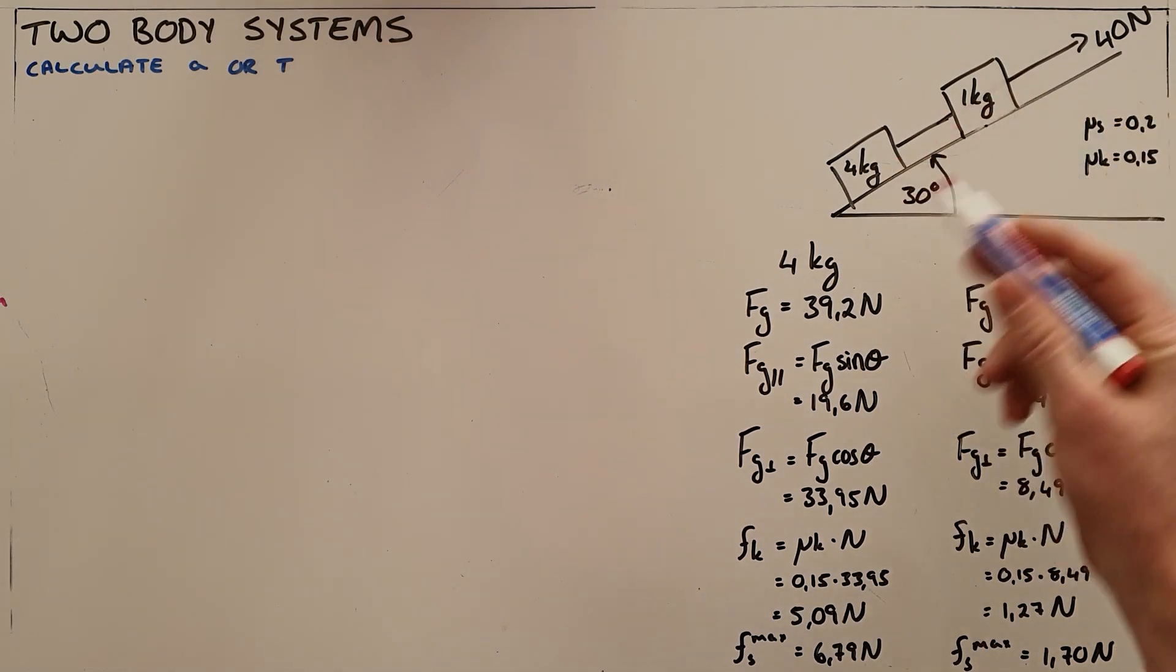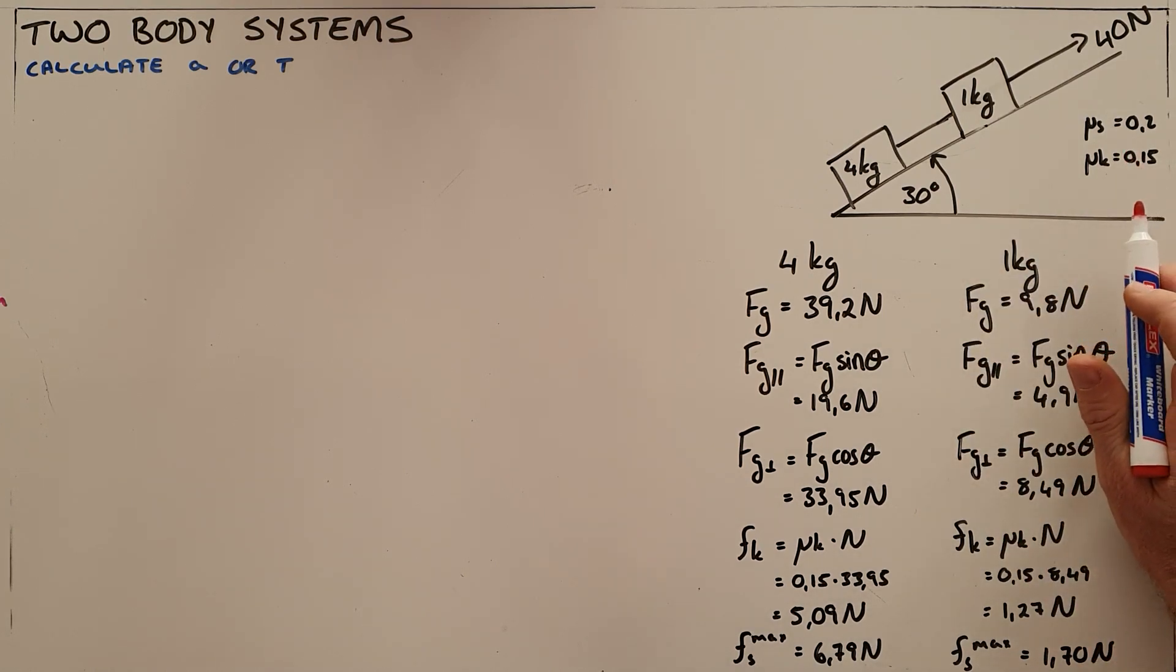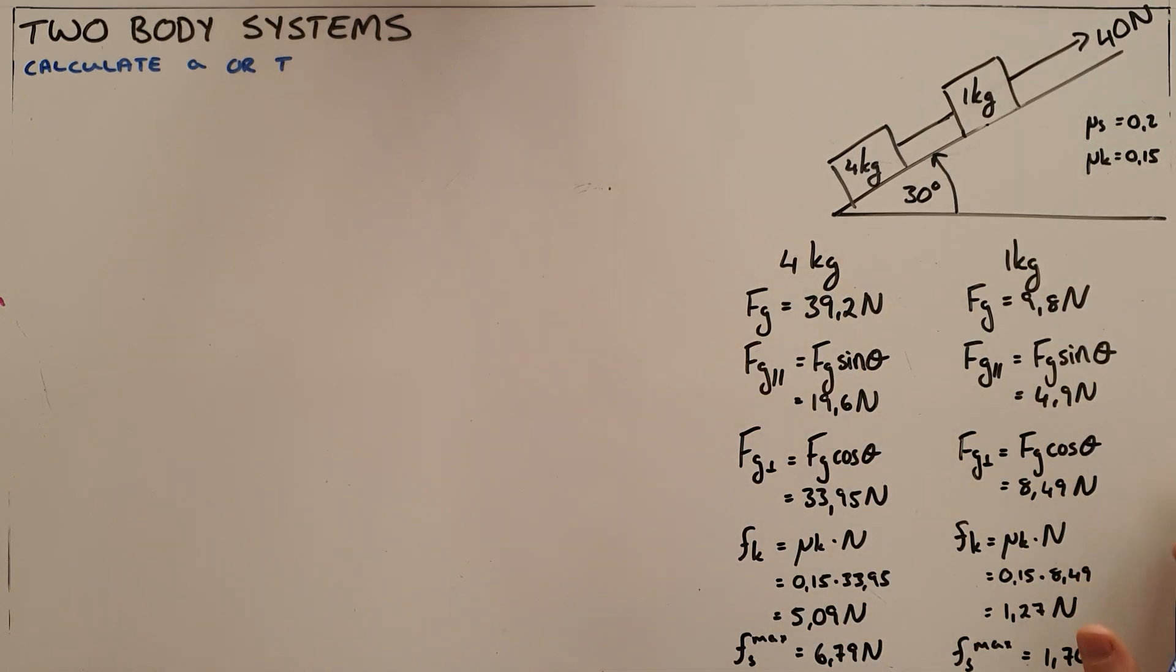So the rope keeps those two objects linked at a certain distance for the duration of the motion and then those objects are acted upon by a number of forces and you are asked to calculate the acceleration or tension in that system.